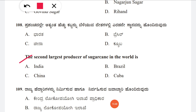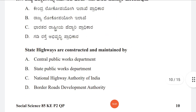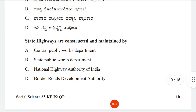Question 108: The second largest producer of sugarcane in the world — option A: India, B: Brazil, C: China, D: Cuba. The correct answer is A, India.